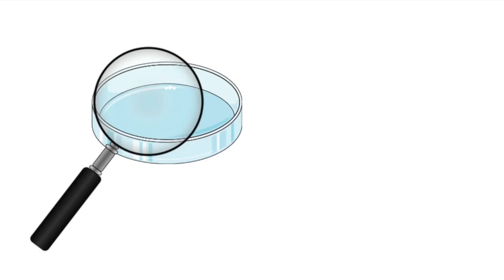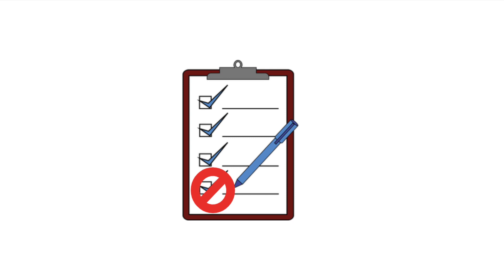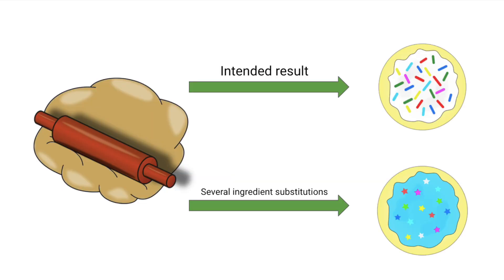Specifically, scientists have determined that the KIF1A protein primarily helps transport materials around nerve cells. In a recipe, if an ingredient is forgotten, measured incorrectly, or substituted for another ingredient, the end result will be different from what was originally intended.